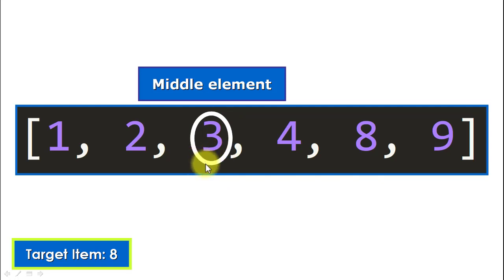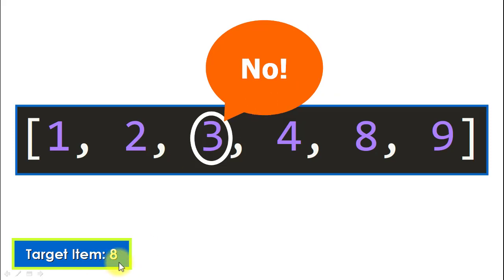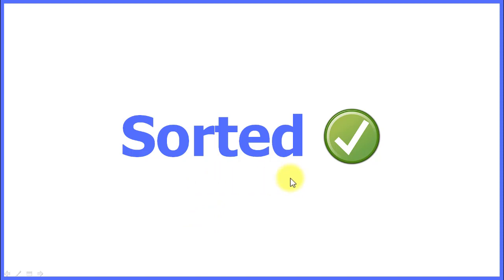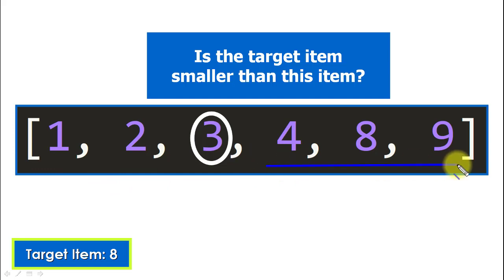The middle index is two, which corresponds to this element — the middle element in the sequence. That element is key for the algorithm: we ask, is this the target item? In this case it's not, because our target item was eight. To determine where the search should continue, we use the fact that the sequence is sorted — all elements to the left are smaller, all to the right are greater.